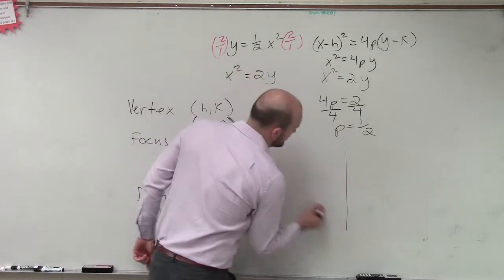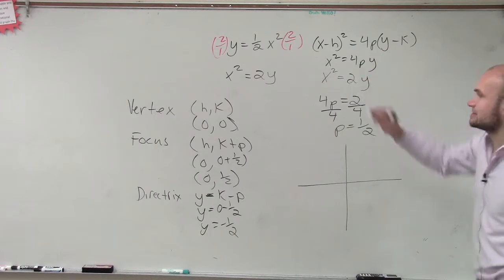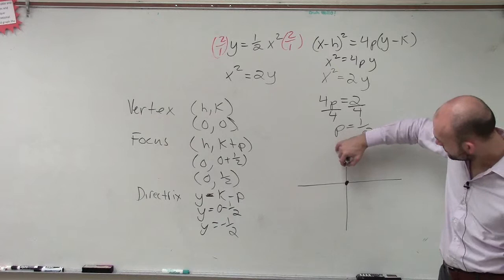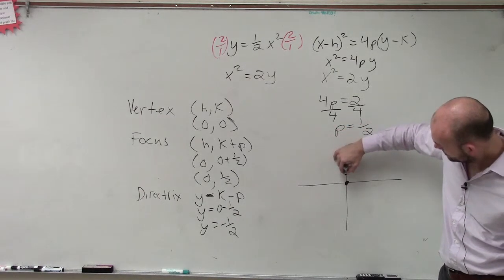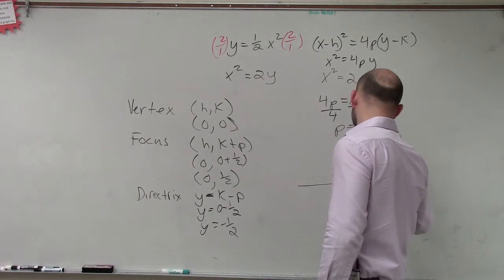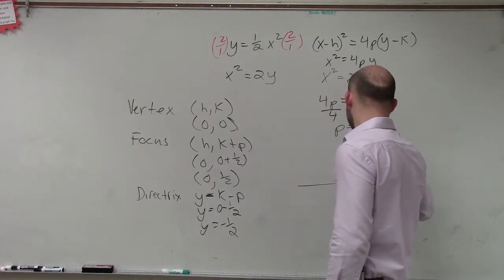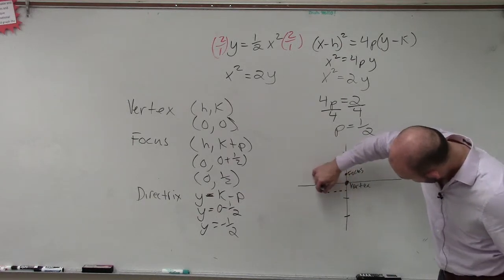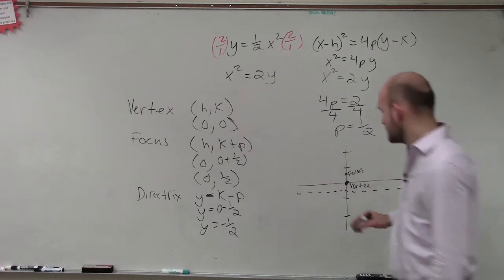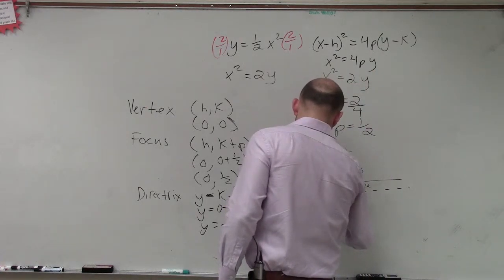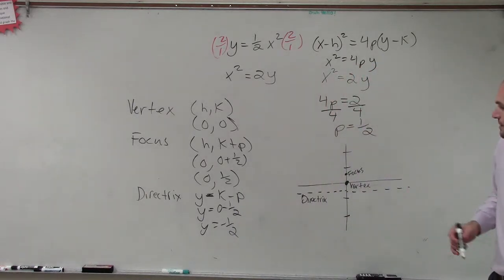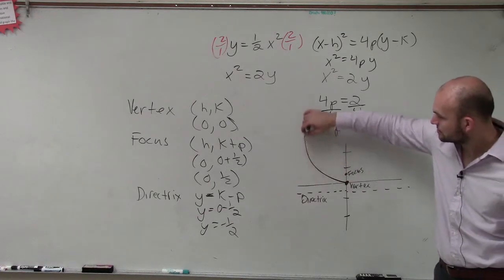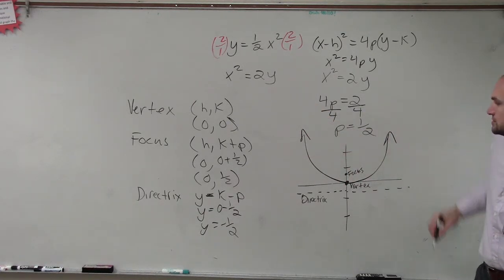So let's go to graph this, what is this going to look like? So I know I have a vertex at zero, zero. My focus is at zero, one-half. So we say, here's the vertex, here's the focus, and then the directrix is at negative one-half. Now remember, ladies and gentlemen, the parabola opens up into your focus. So it's going to look something like that.